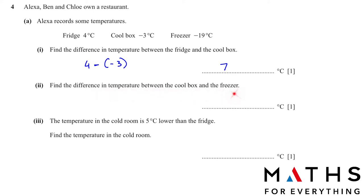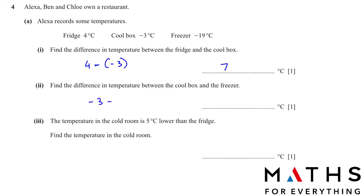To find the difference in temperature between the cool box and the freezer: which is the bigger number between negative 3 and negative 19? With negative numbers, the smaller number is the bigger, so negative 3 minus minus 19 gives 16 degrees. For part (iii), the temperature in the cold room is 5 degrees lower than the fridge. Lower means less, so 4 minus 5 gives negative 1 degree Celsius.